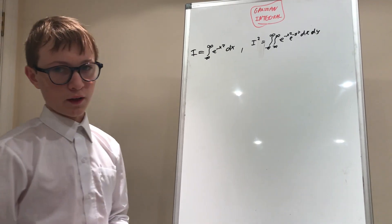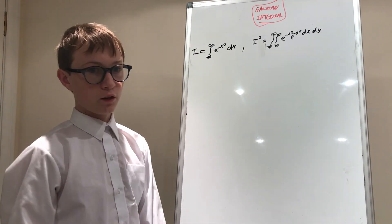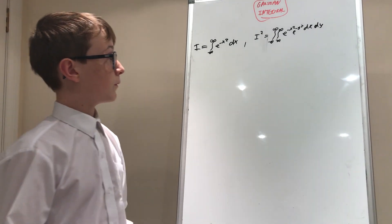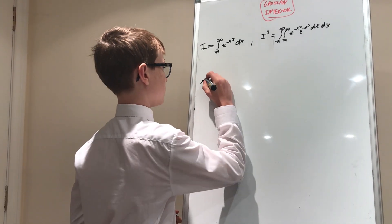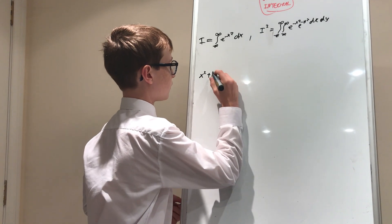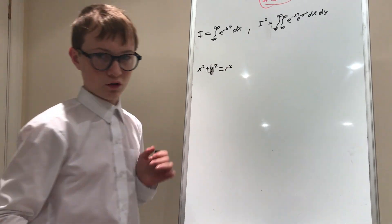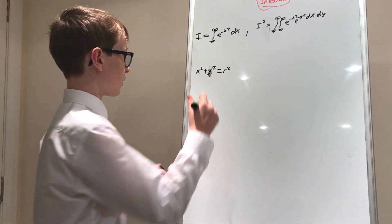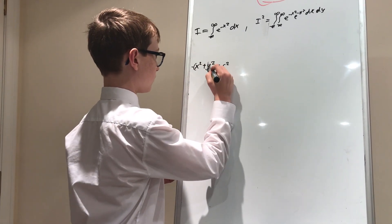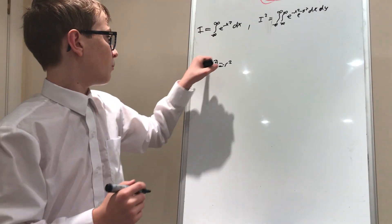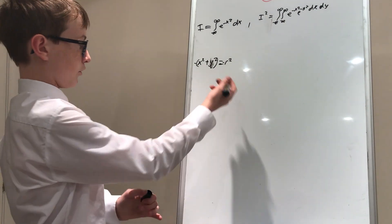So now we have to be cunning. We're going to change this to polar coordinates. So hopefully we all know this: x squared plus y squared equals r squared. This is like the equation for a circle. So if we plug a negative in front, we get negative x squared minus y squared equals negative r squared.